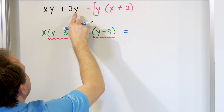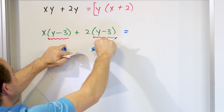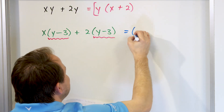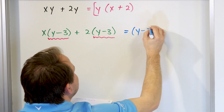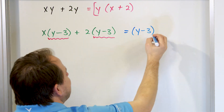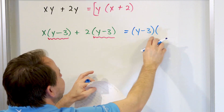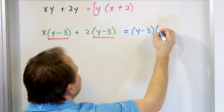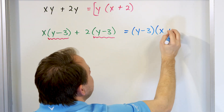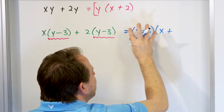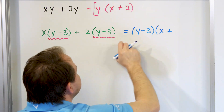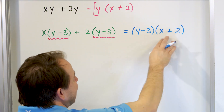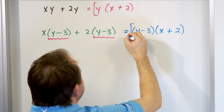Factoring by grouping often means pulling out large terms that happen to be common to both. Just like we pulled out y before, I can grab the quantity y minus 3, which is common to both terms, and pull it out. I wrap it in parentheses: y minus 3 gets pulled out, then I open another parentheses. Y minus 3 times x gives me the first term, plus y minus 3 times 2 gives me the second term. So the factored form is y minus 3 times the quantity x plus 2, and this is the final answer.